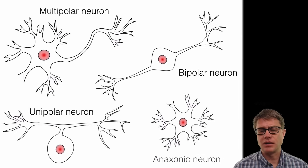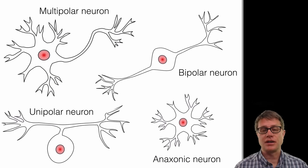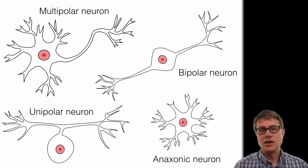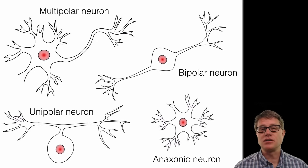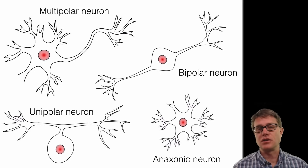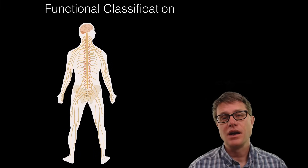And then if we look at the next one, you can see there is no axon on it at all. And so we call that an anaxonic neuron. These are found in the brain and they are not super well understood. Now there are a lot of other structural classifications, but these are the general ones that you are going to find in a typical anatomy class.